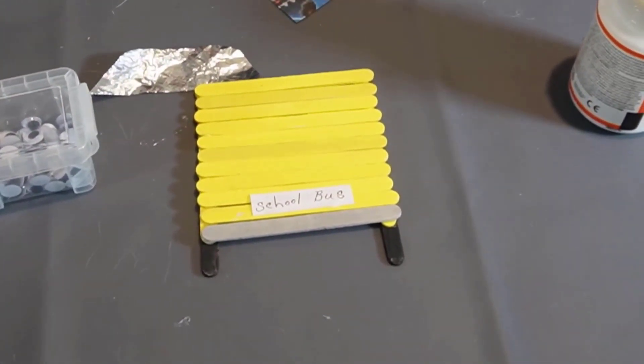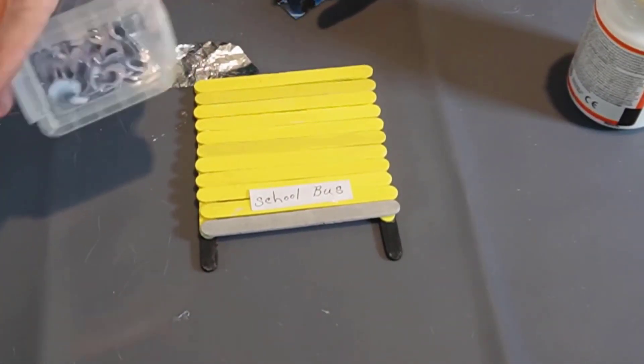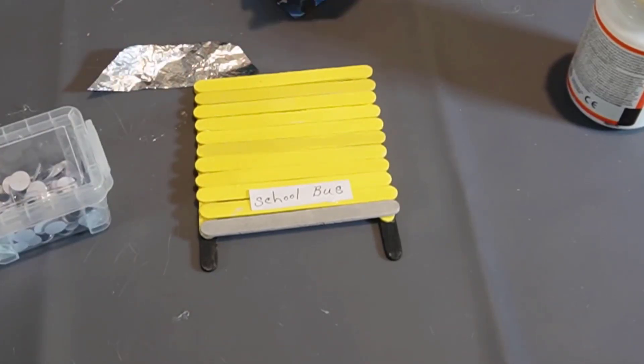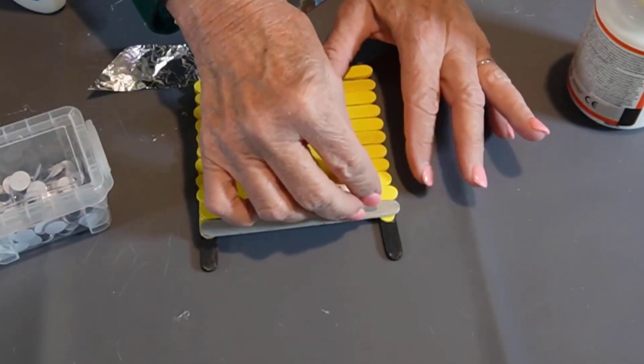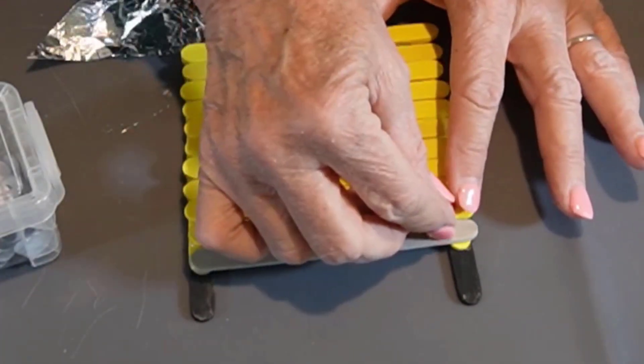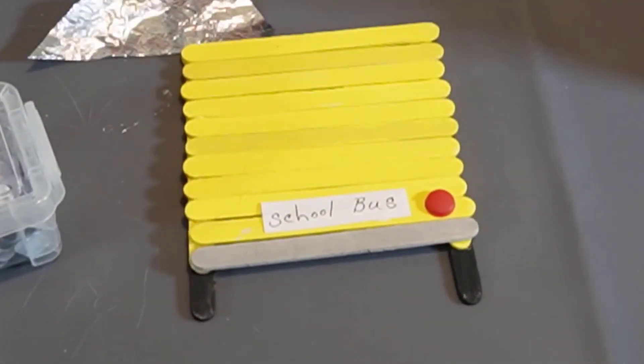And this is an example of using what you have. I have these wiggly eyes and I painted two of them red, and those are going to be the brake lights on the School Bus. You could use felt if you wanted to, or if you have some glass red gemstones, you could use those. Those would look quite nice.